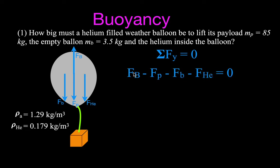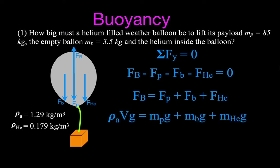The buoyant force acts in the positive direction, minus the force from the payload, minus the force from the balloon, minus the force from the helium, equals zero. Moving those terms to the other side, the buoyant force must equal the force from the payload plus the force from the balloon plus the force from the helium. We substitute in the known equations: the buoyant force equals the density of air times the volume of the balloon times g, and the weight forces follow Newton's second law — mass times g for each object.